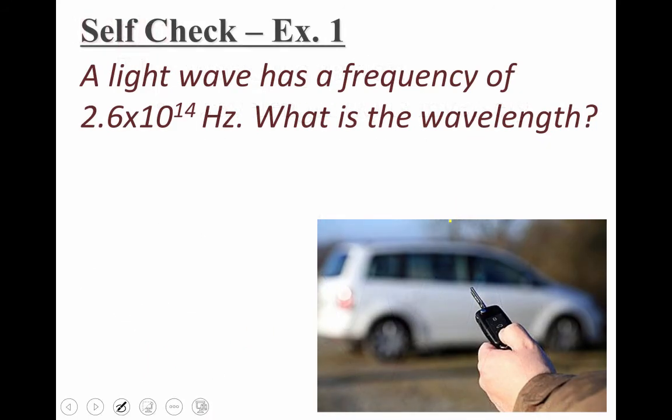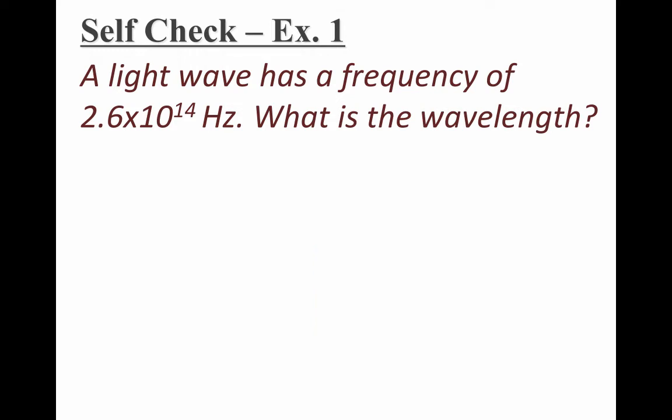Alright, let's try a calculation. It says a light wave has a frequency of 2.6 times 10 to the 14th hertz. What is the wavelength of this particular kind of electromagnetic radiation? By the way, this is the kind of radiation that might be used in a key fob to open the door of your car. Well, to do this, I'm going to use our equation, which says c equals lambda times nu. Speed of light equals the wavelength times the frequency. Alright, so we start plugging in numbers.